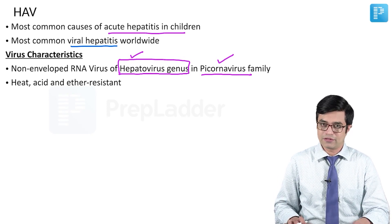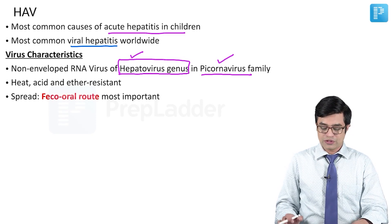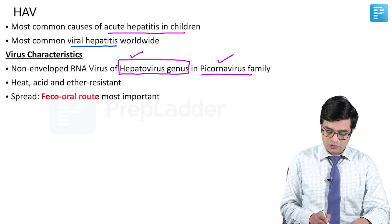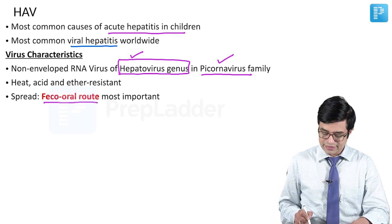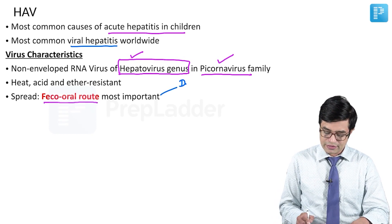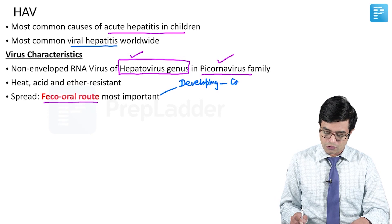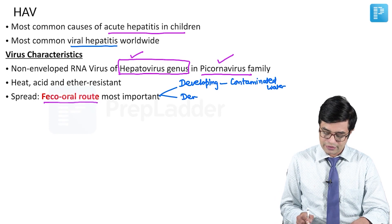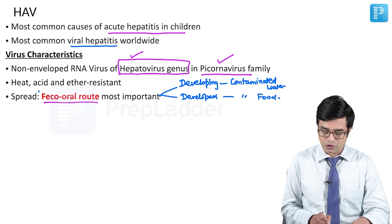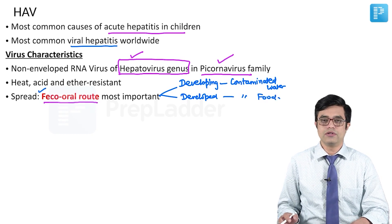But if you just apply heat, the virus will be resistant to that. The spread is mostly by the feco-oral route — it is the most important route. In developing countries, contaminated water is a more important source, whereas in developed countries, contaminated food is more common. But for all practical purposes, it is the feco-oral route.